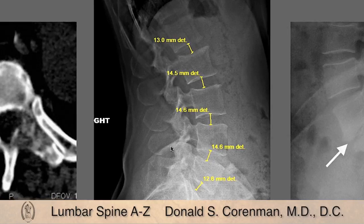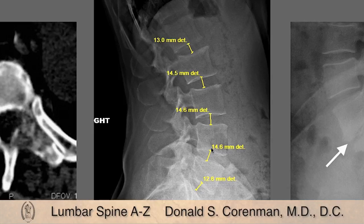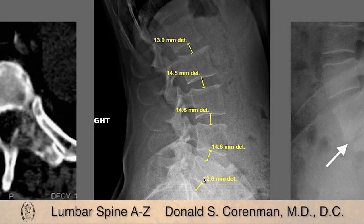Now we're going to get back to the lateral. On the lateral, you can tell generalized disc health by measuring the center of the disc space. The disc heights actually enlarge as you descend into the spine, with the 4-5 level being the largest and then 5-1 being about 11 to 12 millimeters. You can measure these heights to determine if there's degenerative change — a poor man's MRI of degenerative disc disease.